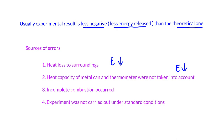Another source of error is that the experiment was not carried out under standard conditions. Standard condition means 25 degrees Celsius and 1 atm (101 kPa). The laboratory temperature may not be 25 degrees Celsius, and the atmospheric pressure may not be the same every day. This may affect the values compared to the standard enthalpy change of combustion. Due to these sources of error, you should remember a few of them — I recommend the first two.